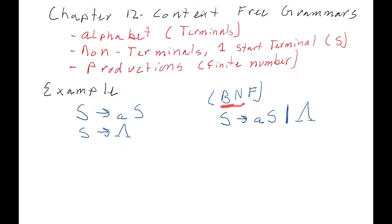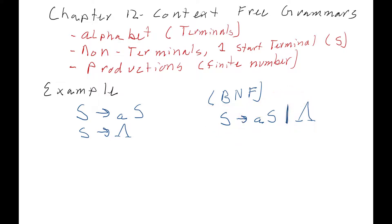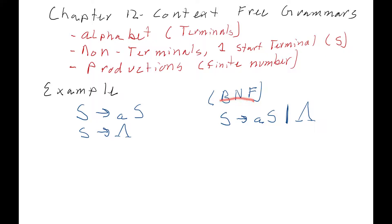There are two people that studied these context-free grammars, Backus and Naur, and they came up with the Backus-Naur form. They wanted a shortcut way to write productions, since writing one production per line got a little tedious. So they said S can get replaced with this or that — it's just a shorthand way of writing down a context-free grammar. In lots of other classes they'll talk about BNFs, and whenever they say BNF, they're just talking about a context-free grammar.